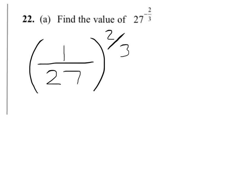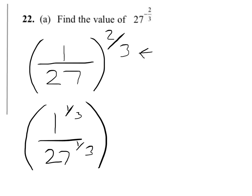We now need to take the third — that's the bottom part of the fraction — and that means cube root. We cube root the top and bottom numbers separately, and then move on to squaring them. So the cube root of 1 is 1, and the cube root of 27 is 3.